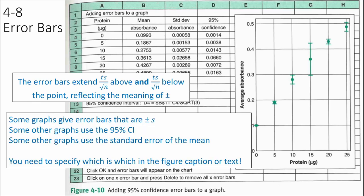Be a little careful here because some graphs use error bars as just the standard deviation above and below — average plus or minus the standard deviation — and that's okay. Other graphs use the confidence interval. Some other graphs use a different thing called standard error of the mean. So it's your job to specify, if you put error bars on, that your error bars are the 95% confidence interval, or whatever they are.